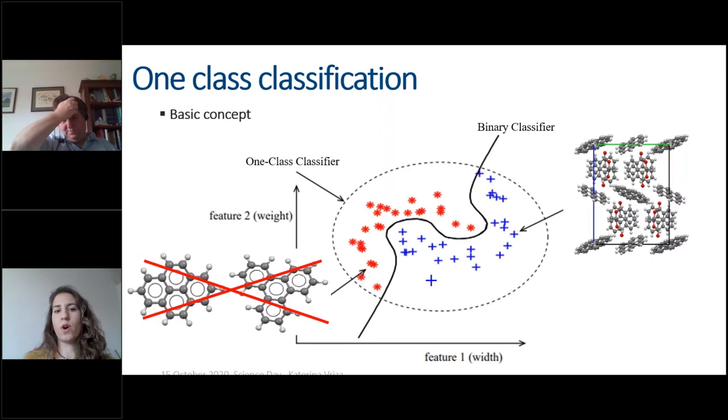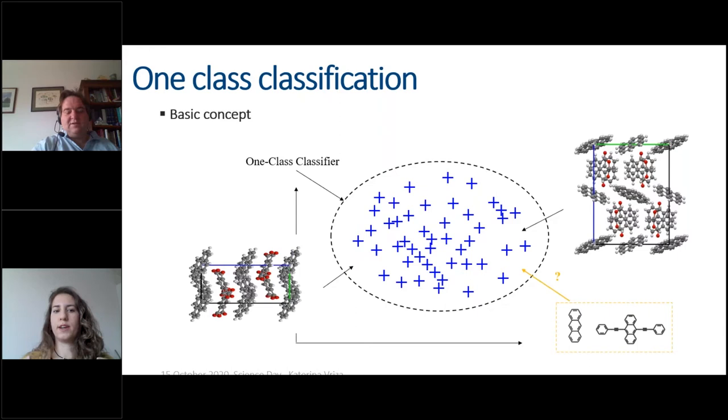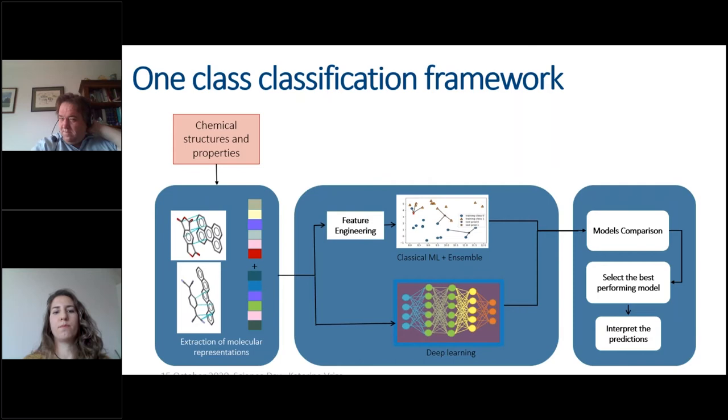If we apply this concept to co-crystals, instead of trying to find pairs that work and pairs that do not work, we just try to focus only in the area where the known co-crystals are and then try to see if a new pair of possible molecules can be found in the same cluster as well with the known ones.